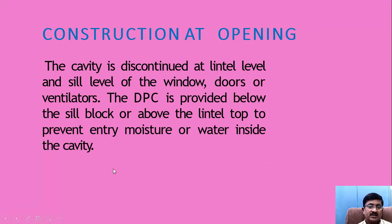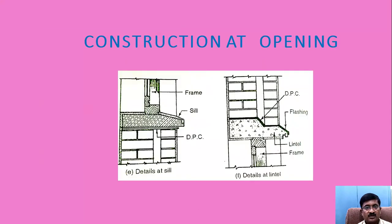Construction of the openings: the cavity is discontinued at lintel level and sill level of windows, doors, or ventilators. A damp proof course is provided below the sill block or above the lintel top to prevent entry of moisture or water inside the cavity. You can see how the damp proof course is provided — this is the outer leaf and this is the inner leaf. On the lintel, the cavity is maintained and the damp proof course is provided. The inner leaf is thicker than the outer leaf.